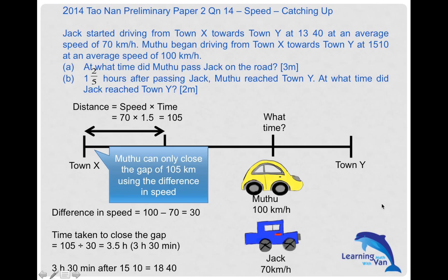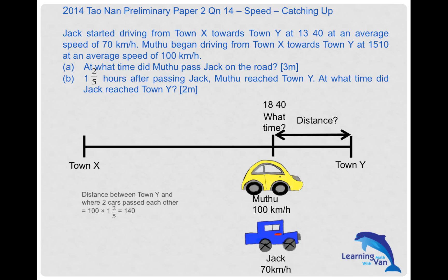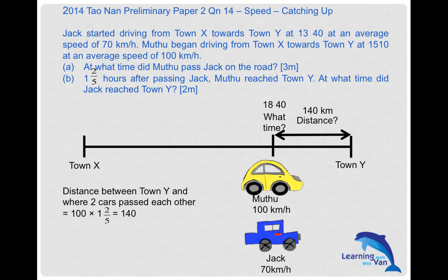Now for part two: one and two-fifth hours after passing Jack, Mutu reached Town Y. So Mutu took one and two-fifth hours to cover the remaining distance. Applying the formula again with Mutu's speed, the distance between where the two cars passed each other and Town Y is 140 kilometers.